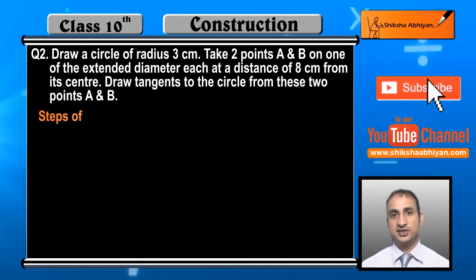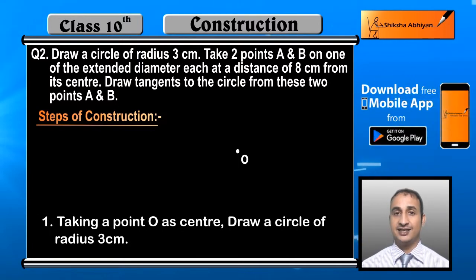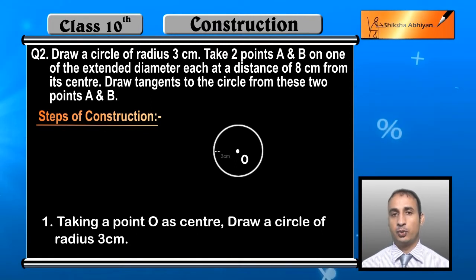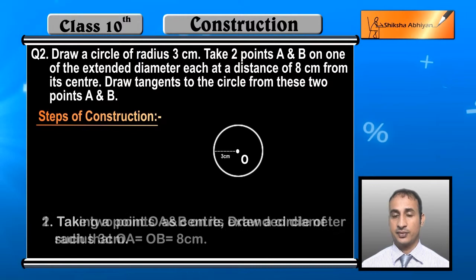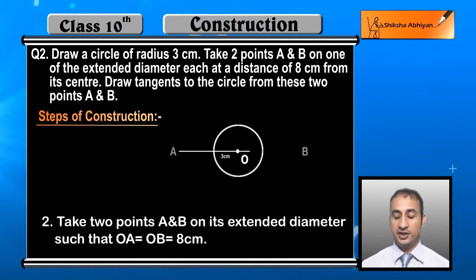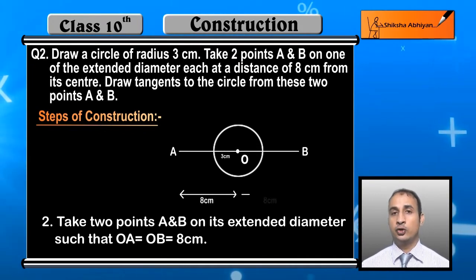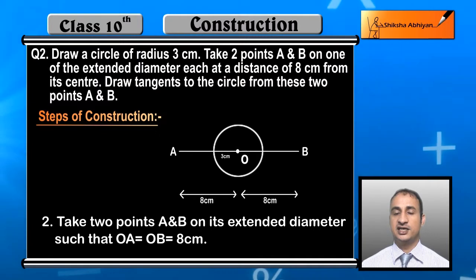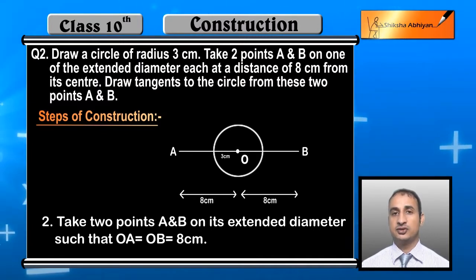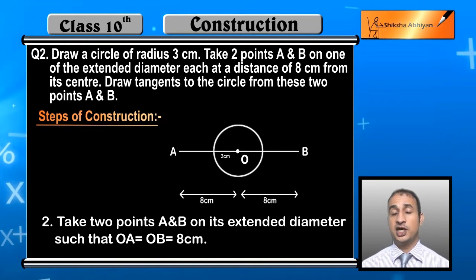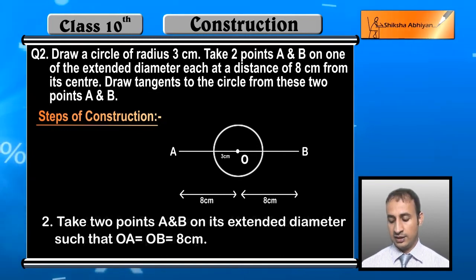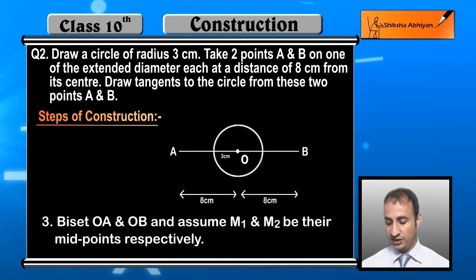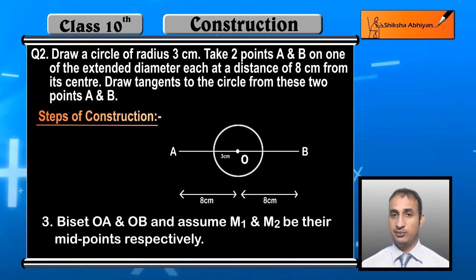Steps of construction: taking a point O as center, draw a circle of radius 3 centimeters. Now take two points A and B on its extended diameter such that OA is equal to OB is equal to 8 centimeters. Now bisect OA and OB, and let M1 and M2 be their midpoints respectively.